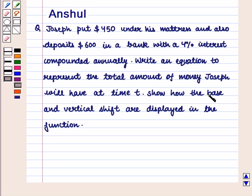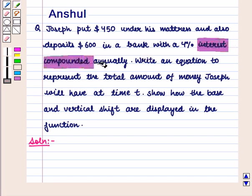Show how the base and vertical shift are displayed in the function. Now let us start with the solution of this question. This problem deals with the interest that is compounded annually, and we need to write an equation that represents the total amount of money Joseph will have at time t.